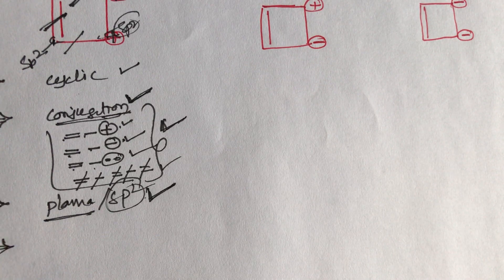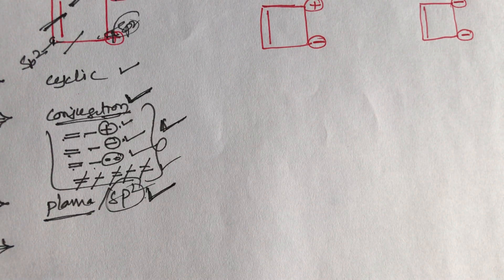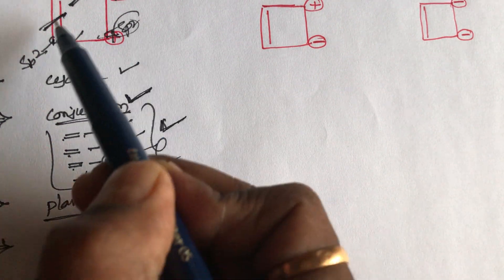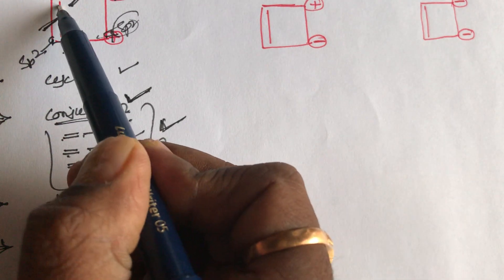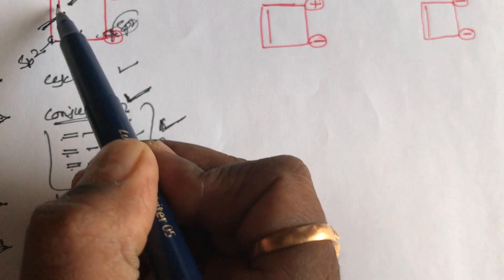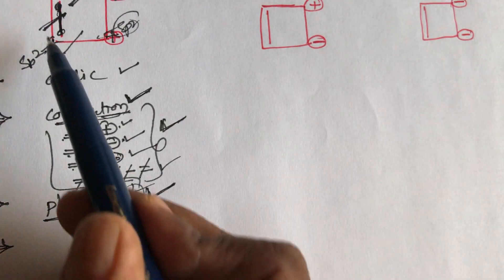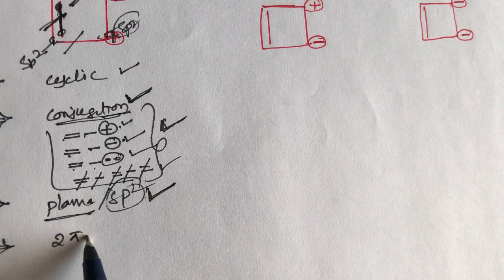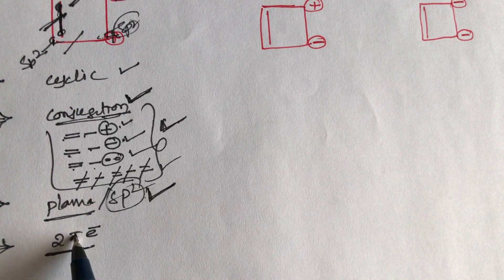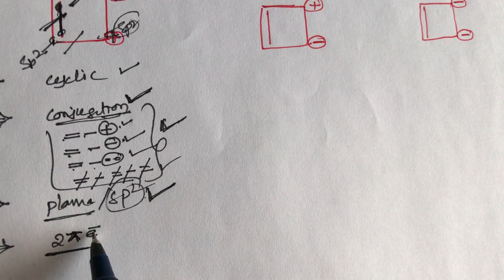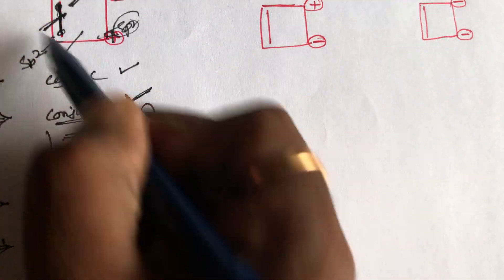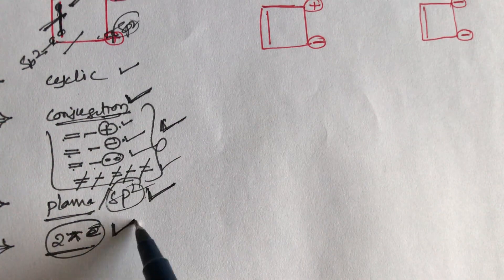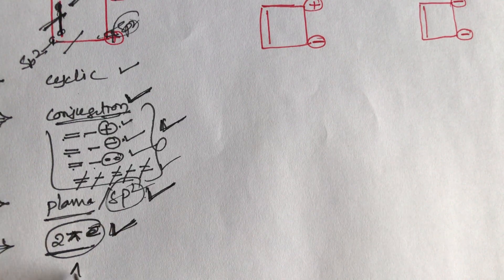What about the fourth condition? The fourth condition is that the compound must follow Hückel's rule. How many pi electrons are there in the given compound? There is only one double bond, which means only one pi bond. A double bond always has only two pi electrons. So in this given compound, only two pi electrons are present. If two pi electrons are present, it belongs to aromatic.